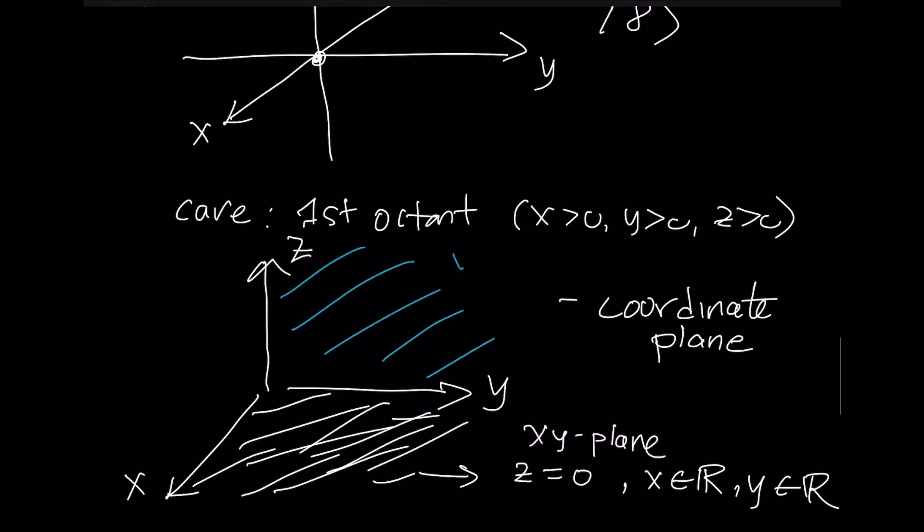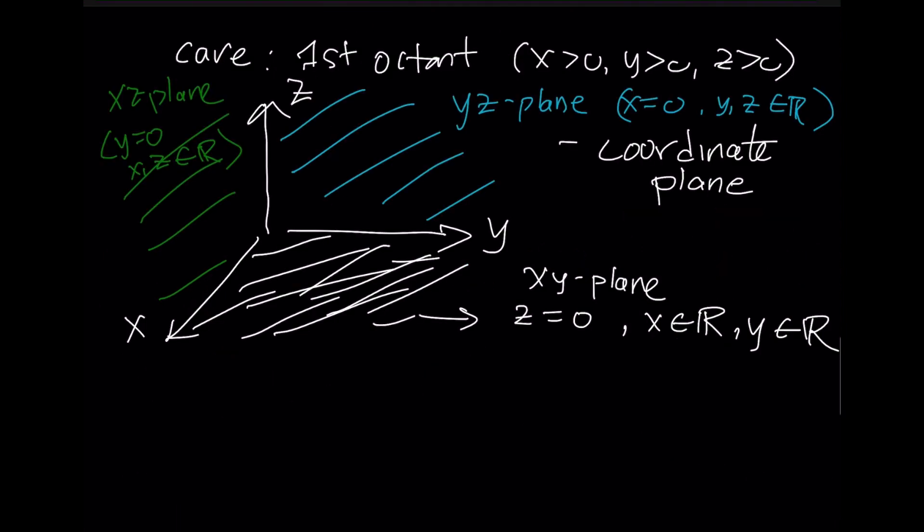So this is going to be called the xy plane. This is going to be called the yz plane. And this is where x is equal to zero, y and z are free to be whatever number we'd like. And over here, we're going to talk about the xz plane. And here, this is where y is zero, and x and z are free to be whatever we'd like.